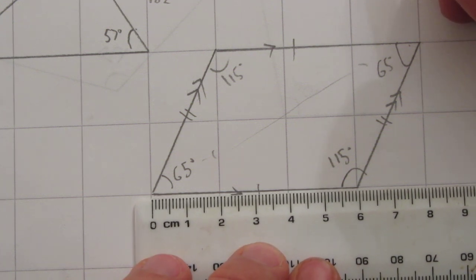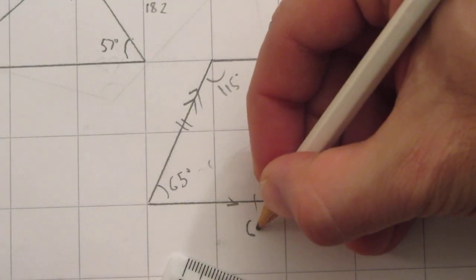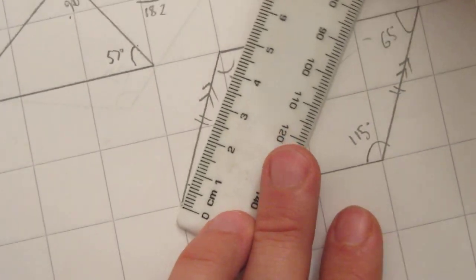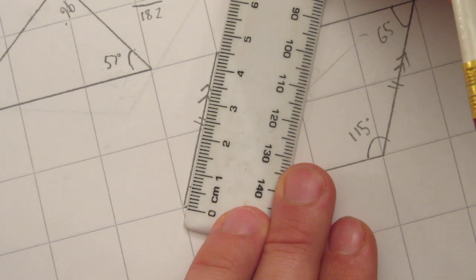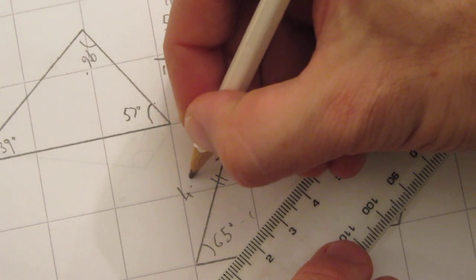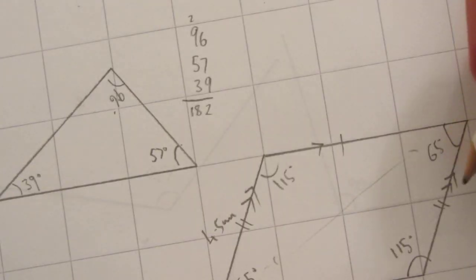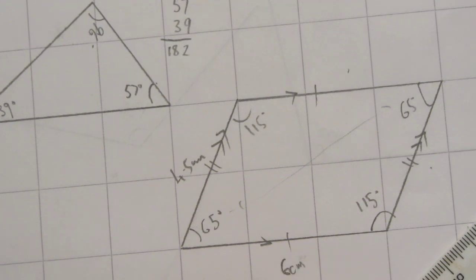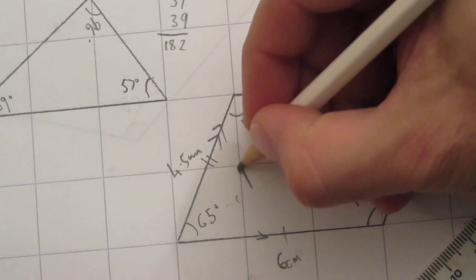Then if you really want it, you could also measure the side lengths. That's six centimeters, and that is, what do you reckon, 4.5? I make it 4.5 centimeters. So in that case, that's 4.5 and that's six centimeters. Still don't know what shape it is.